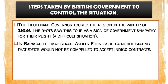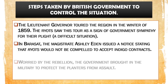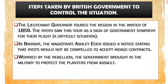Second, in Barasat district, Magistrate Ashley Eden issued a notice stating that ryots would not be compelled to accept indigo contracts — meaning planters should not force cultivators to sign contracts against their will. The British government, worried by the rebellion, also brought in the military to protect the planters from assault, as indigo cultivators had attacked them.